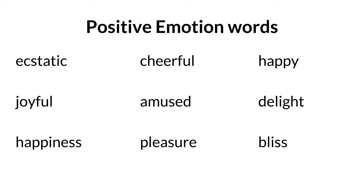Then you take your text sample of interest and count how often these words are used in your text. Several such dictionaries already exist, so rather than create your own new lexicon, you could just use a pre-existing dictionary for your analysis. The words you see here are a few words from one such lexicon that we've developed — the positive emotion lexicon from the PERMA lexica.